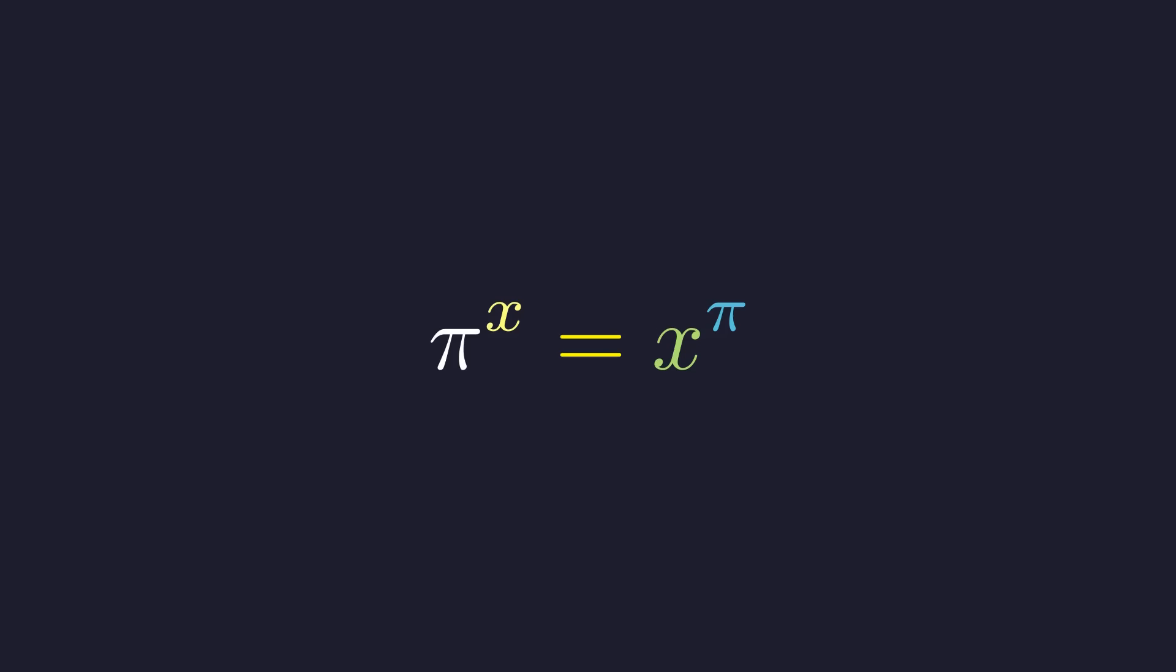Here's a problem that might seem completely impossible at first glance. We have pi to the power of x equals x to the power of pi. You might be thinking, how on earth are we supposed to solve for an unknown that appears both in the base and in the exponent?